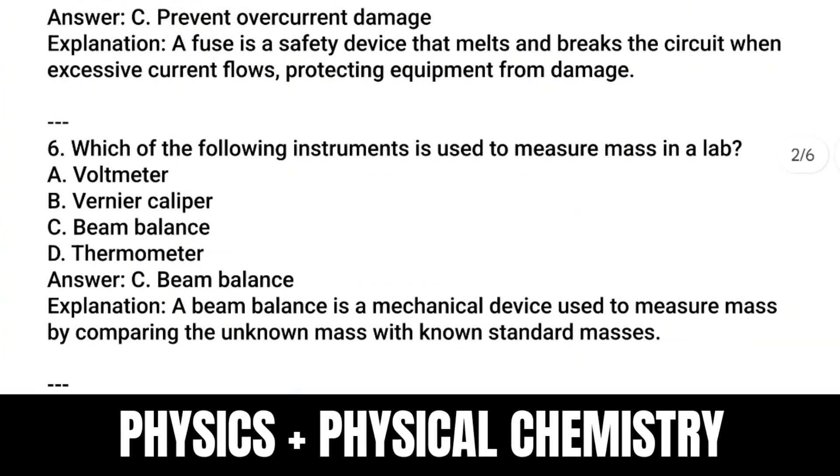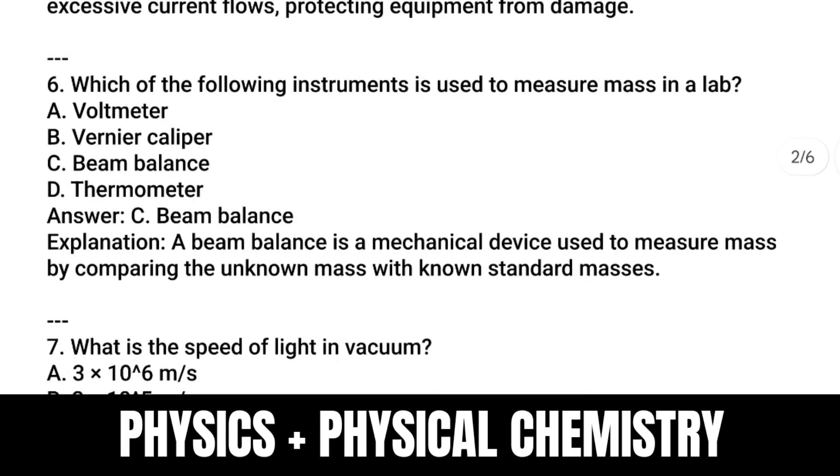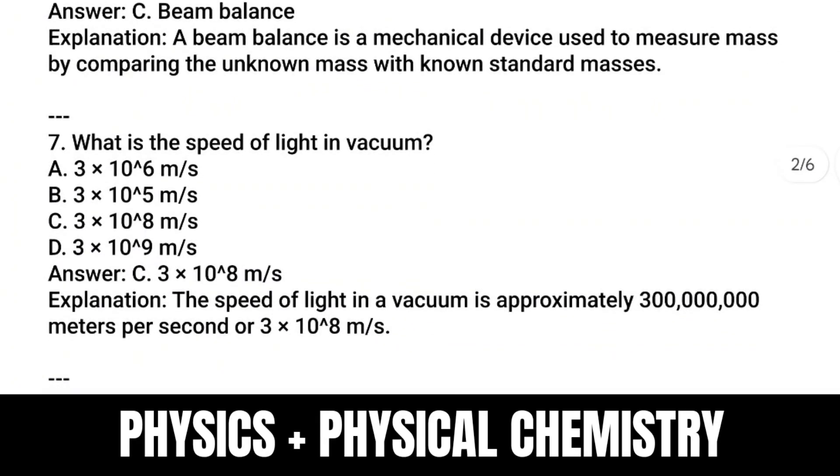Question number six: Which instrument is used to measure mass in a laboratory? Answer is beam balance. A beam balance is a mechanical device used to measure mass by comparing the unknown mass with a known standard mass. Question number seven: What is the speed of light in vacuum? Answer is 3 × 10^8 meters per second.